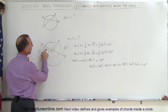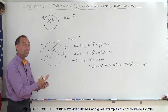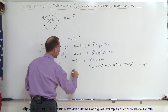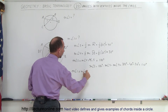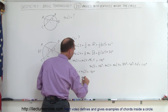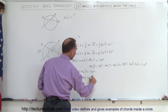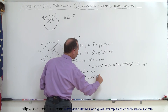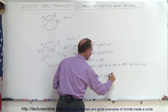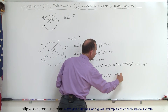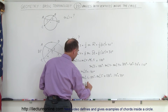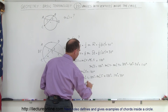Notice that angle 1 and angle 5 are supplementary angles — they must add up to 180 degrees. So the measure of angle 1 plus the measure of angle 5 equals 180 degrees, which means angle 1 equals 180 minus 110 degrees, which equals 70 degrees. So the measure of angle 1 equals 70 degrees.